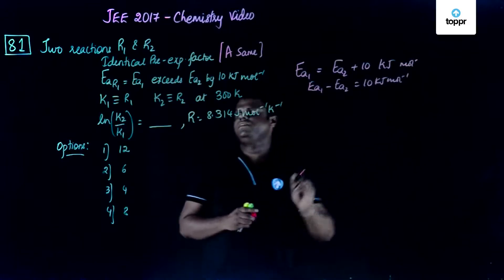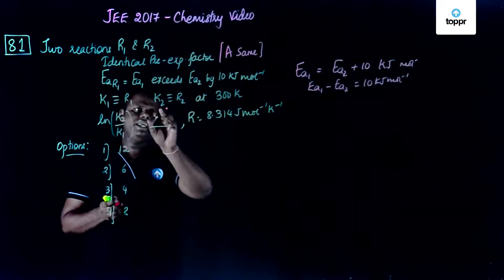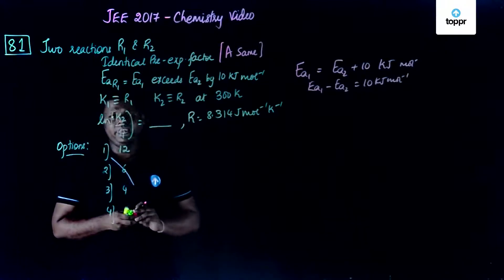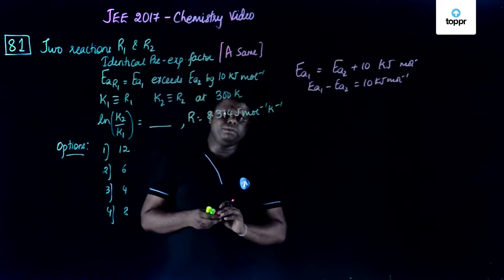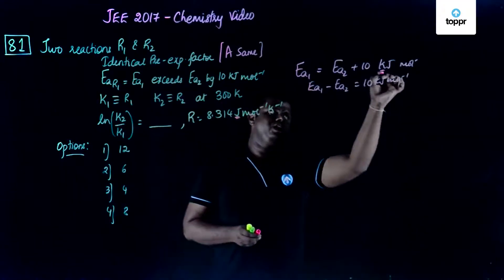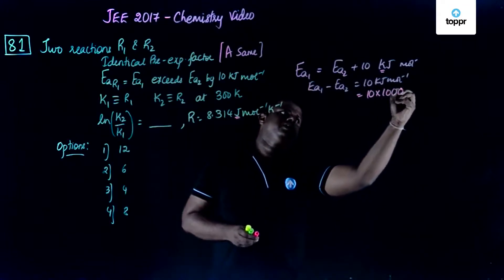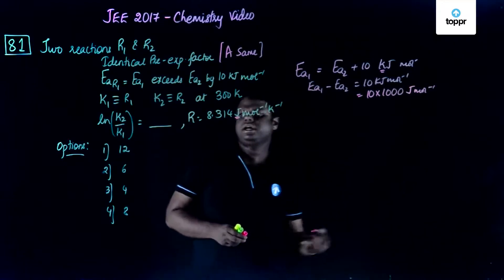The rate constant k1 corresponds to R1, k2 corresponds to R2 at temperature 300 kelvin, and we are expected to find ln(k2/k1). R is given as 8.314 joule per mole per kelvin. The first thing to take care of is joule and kilojoule, so you have to convert this into joule: 10 into 1000 joule per mole.